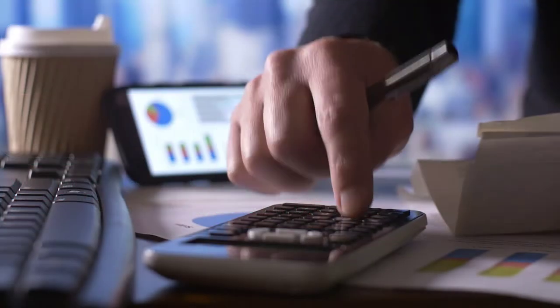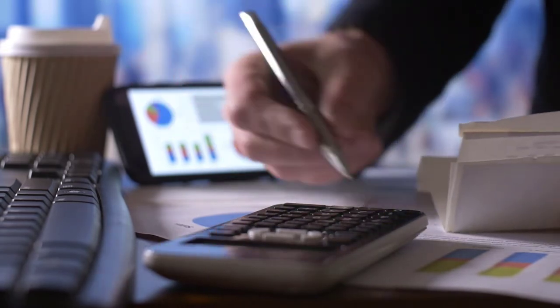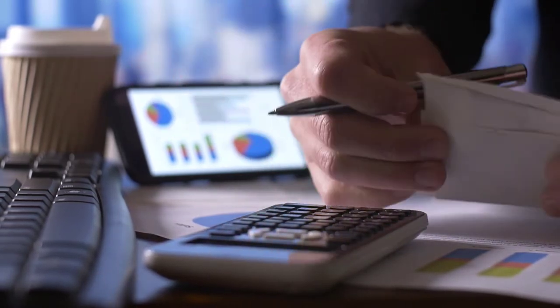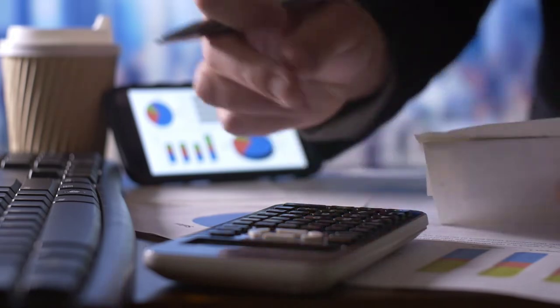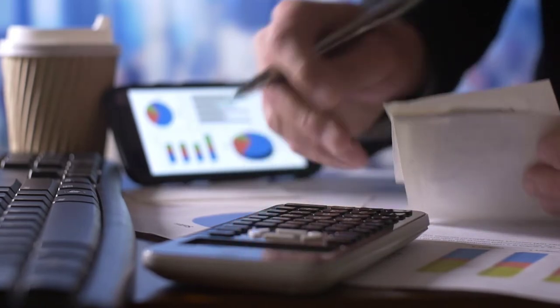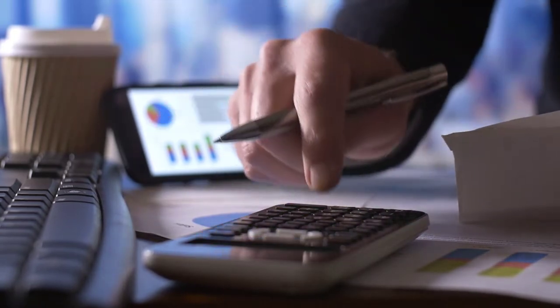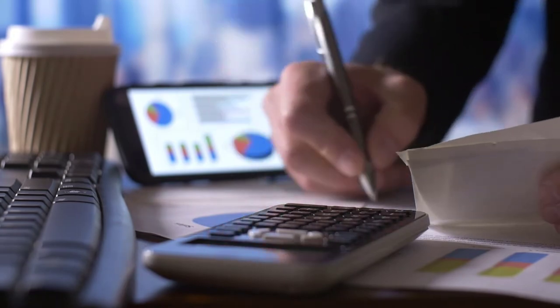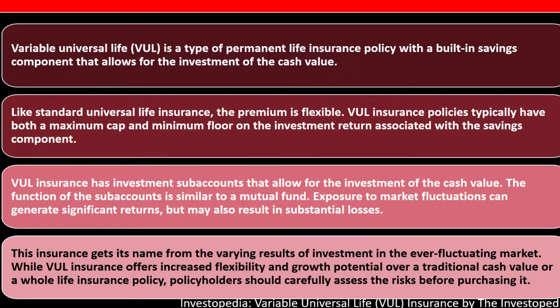If the insurer is holding on to this money and interest rates are low, why not invest it and earn a return similar to the stock market or an index fund? The returns are usually higher, but it comes with added risk factors. This insurance gets its name from the varying results of investment in the ever-fluctuating market. While VUL offers increased flexibility and growth potential over traditional whole life insurance, policyholders should carefully assess the risks before purchasing.